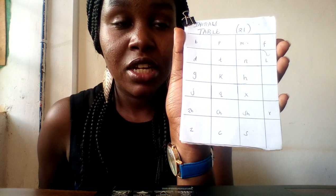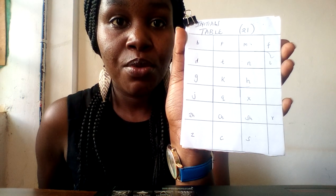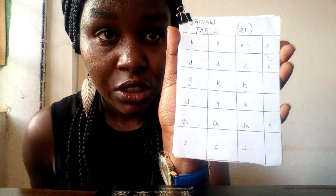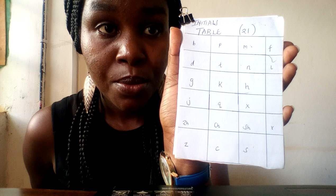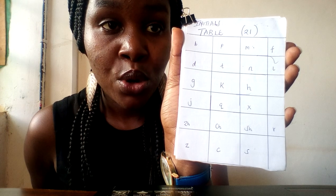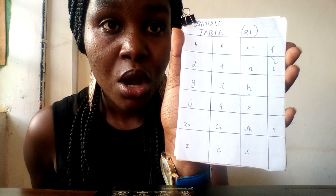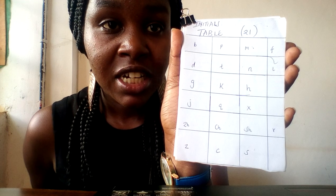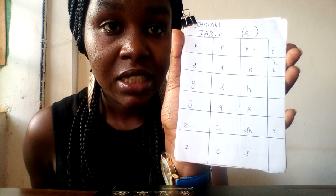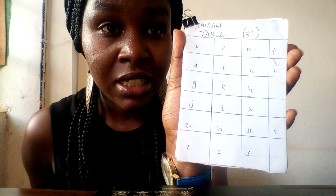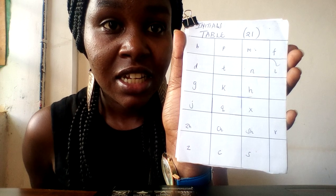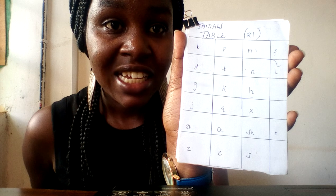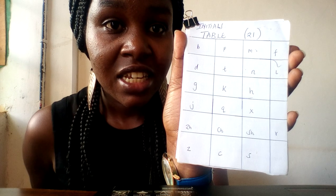I have written them down in a table form for you to see. So we have: b, p, m, f, then d, t, n, l, then g, k, h, and then j, q, x.